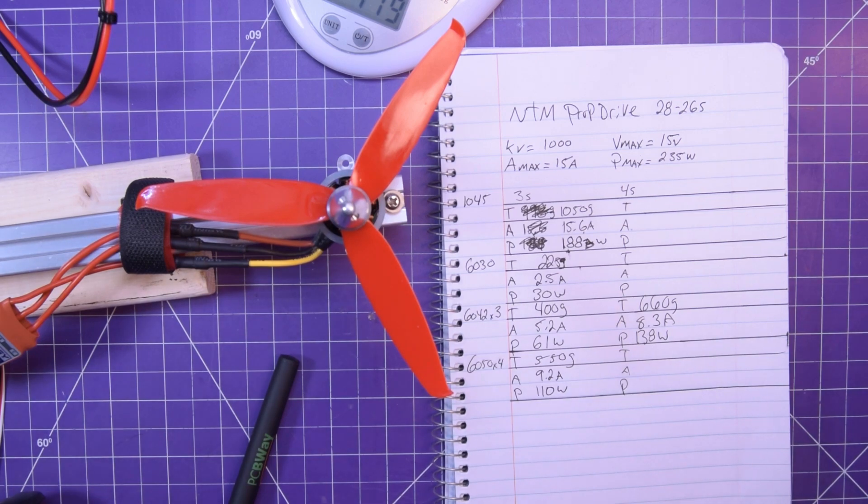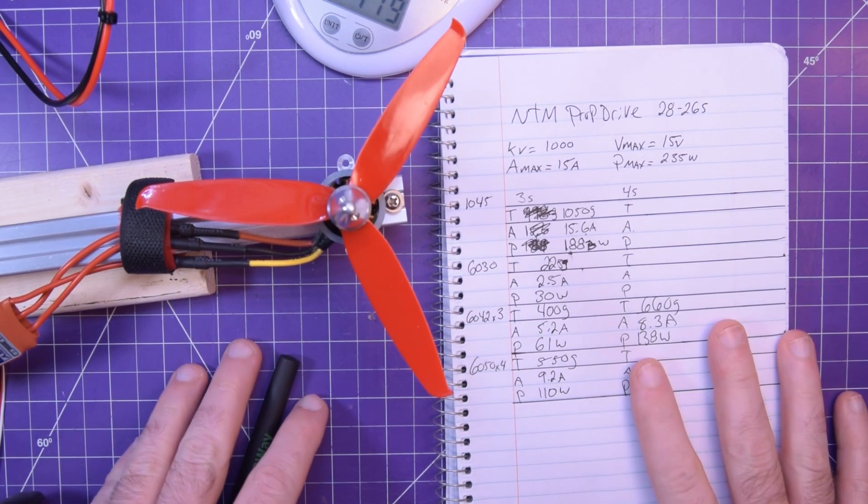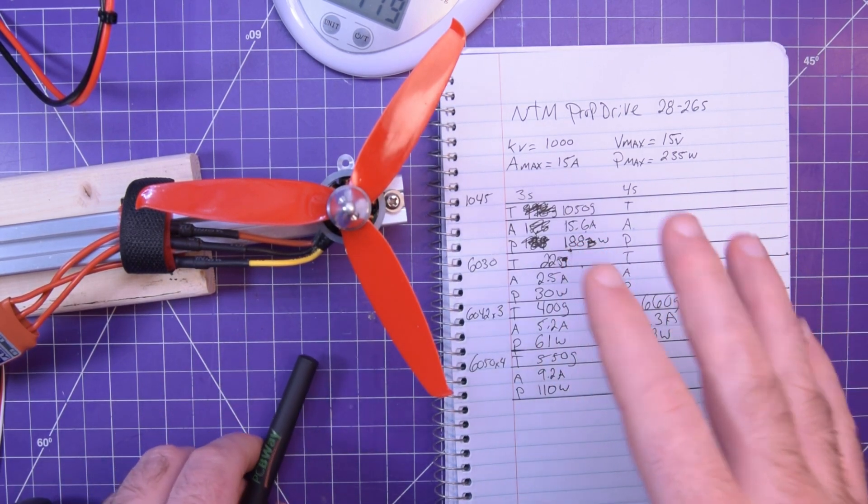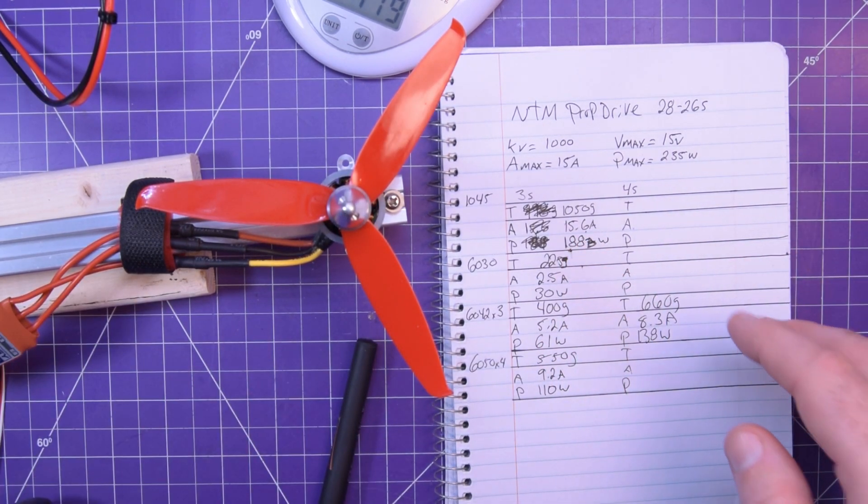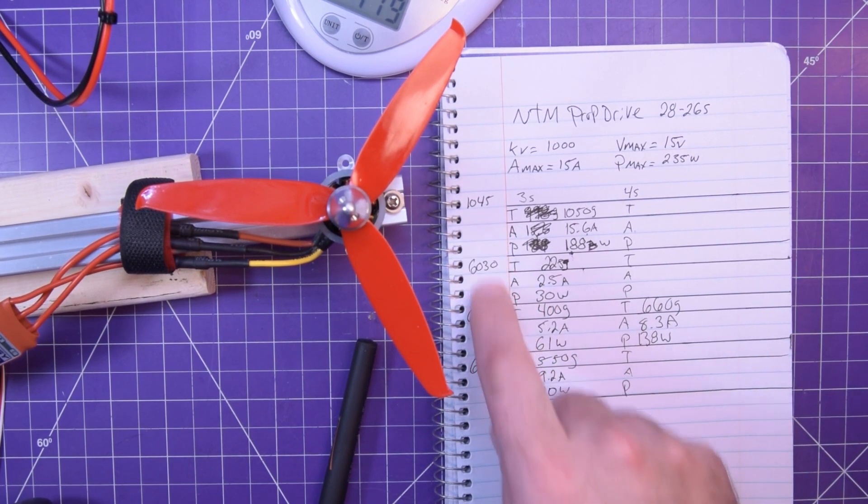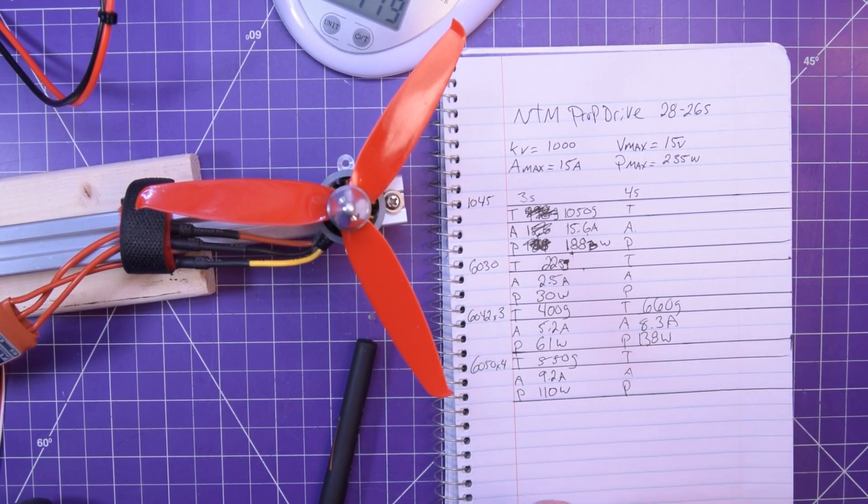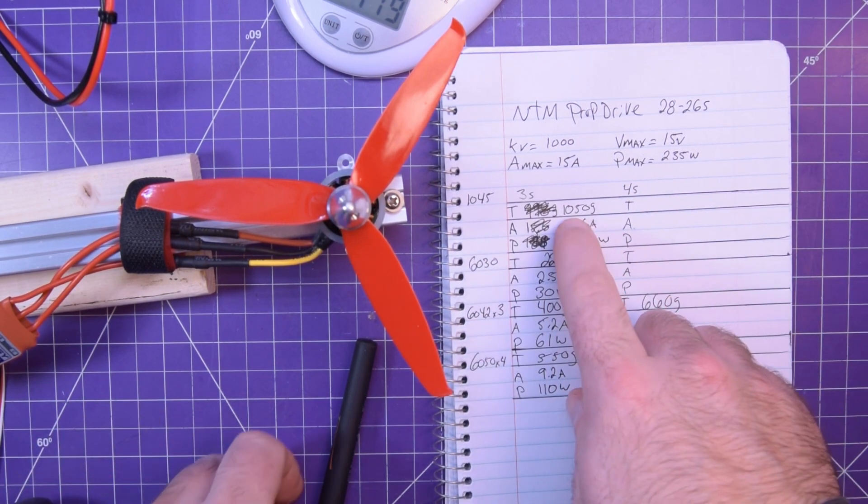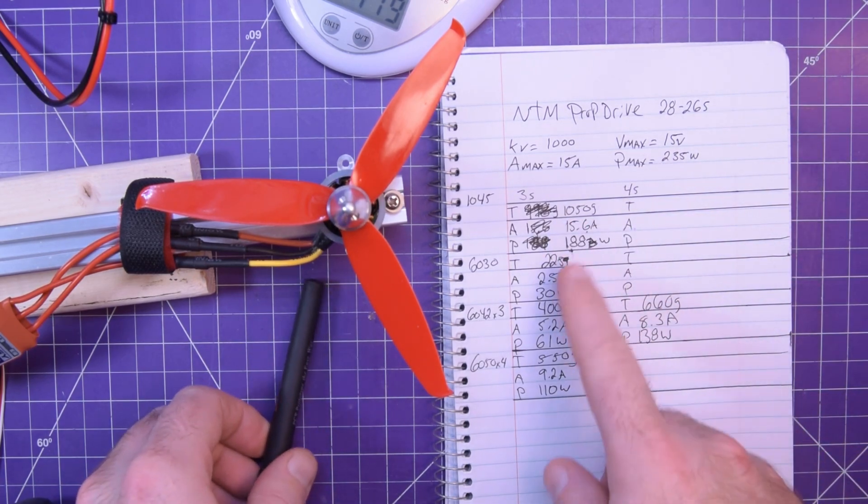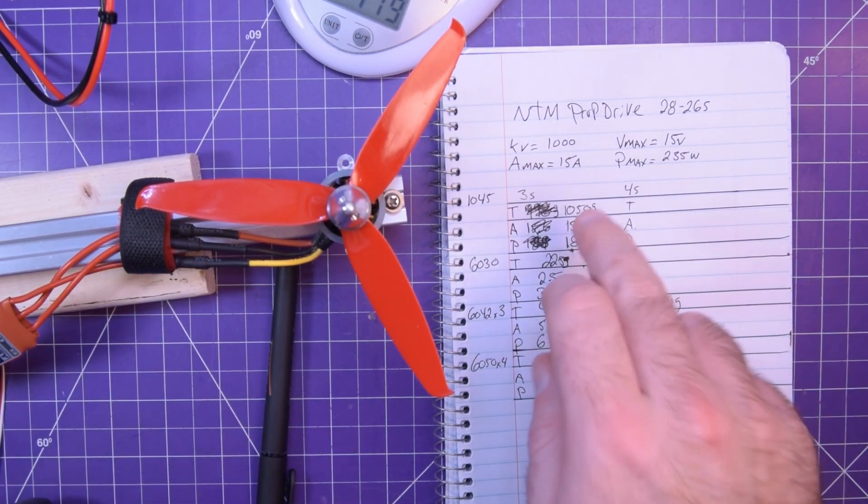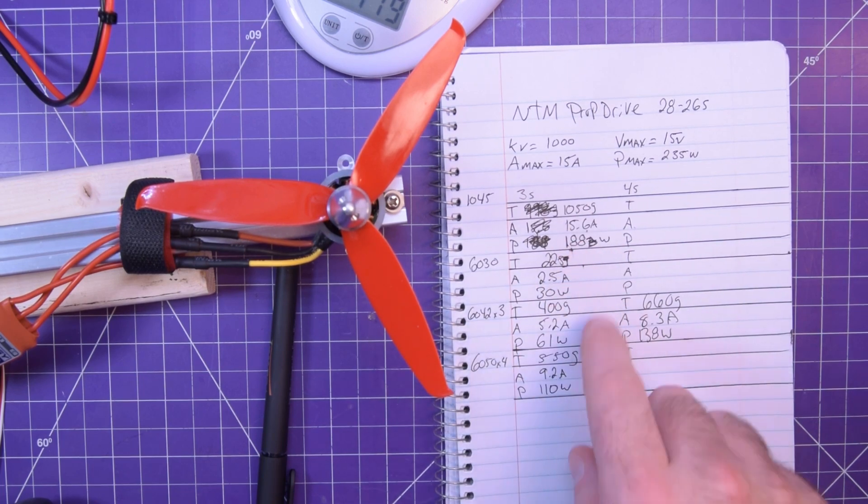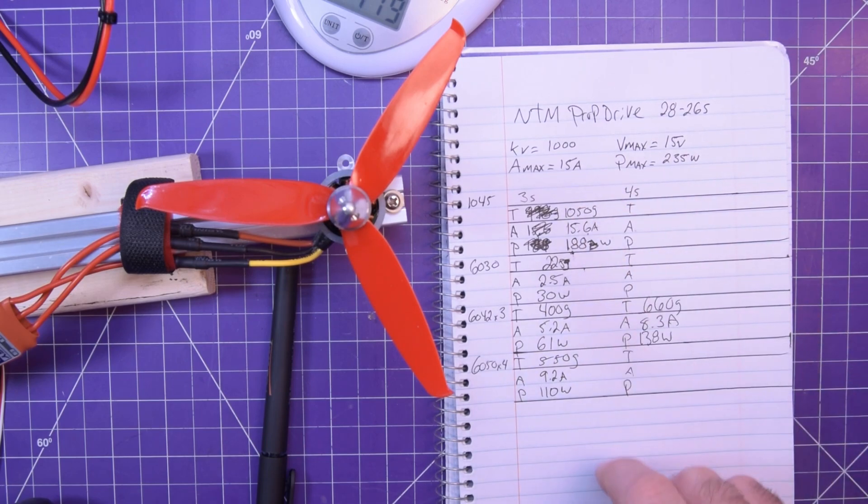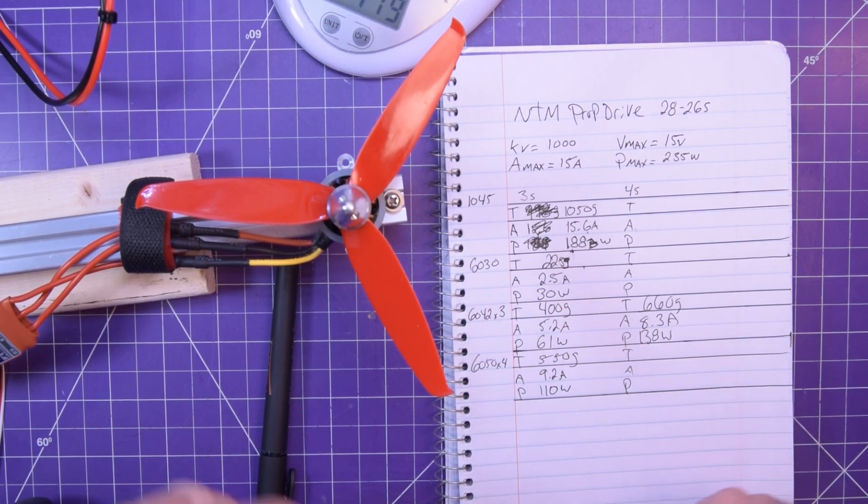Well, the good news is the rig worked. The bad news is I'm going to hope that 400 grams is enough thrust. I don't think it is, but let's look at the breakdown. So for a 1045, 10 inch prop 4.5 inch pitch, we got a thousand grams, a kilogram of force. That's 2.2 pounds or so. That's quite a bit of thrust. That is good thrust. But at 15.6 amps. So we were maxing this motor out. 188 watts. So it'll stay cool, but that current is kind of getting close.